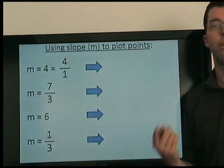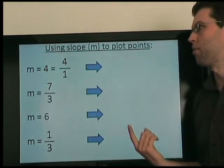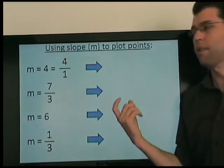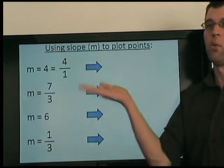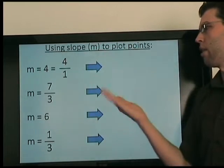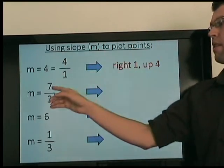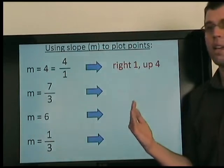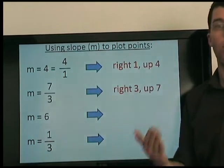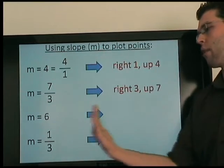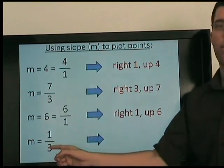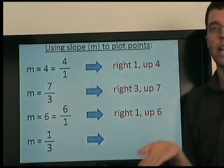Let's practice how to plot points for a given slope. The number 4 is the same as 4 over 1, so as x changes by 1, y changes by 4 — we go right 1 and up 4. For 7 thirds, we go right 3 and up 7. 6 is the same as 6 over 1, so as we go right 1, we go up 6. For 1 third, we go right 3 and up 1.